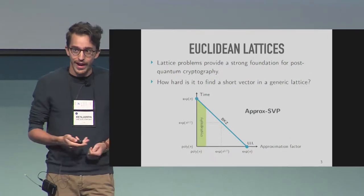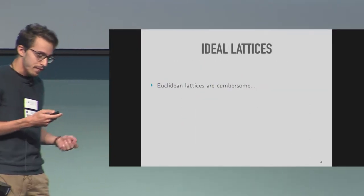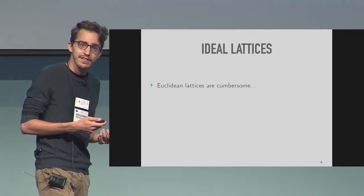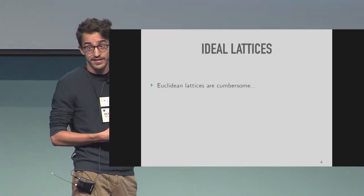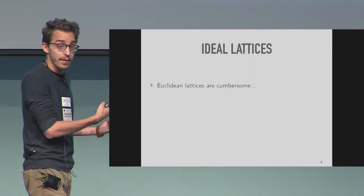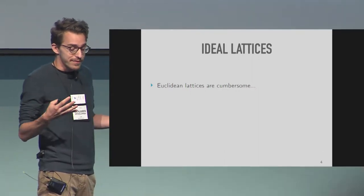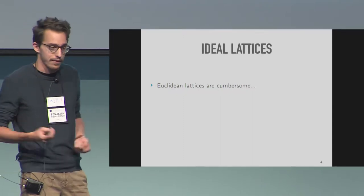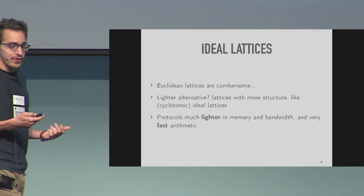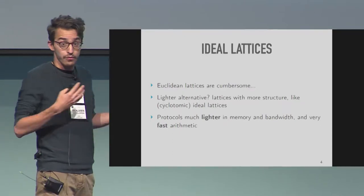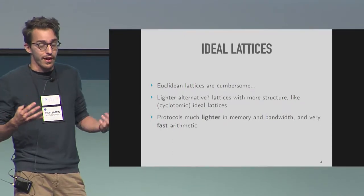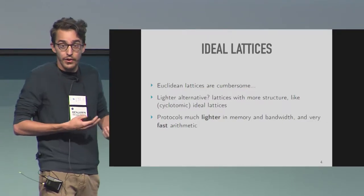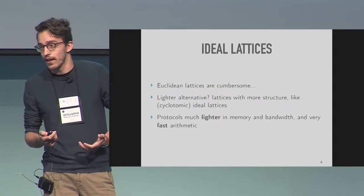Ideal lattices are a particular case of Euclidean lattices. The problem with generic Euclidean lattices is that when you try to design cryptographic schemes based on them, you realize very quickly that you're going to end up with a lot of memory and bandwidth requirements. You can use lighter alternative lattices with more structure that allow you to build faster algorithms and protocols with lighter memory and bandwidth. The typical example of this are cyclotomic ideal lattices.